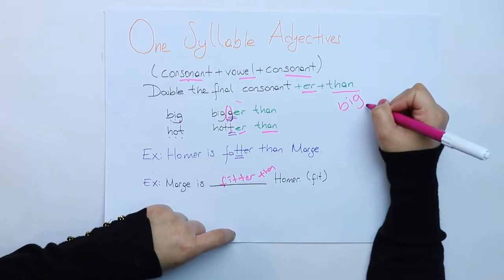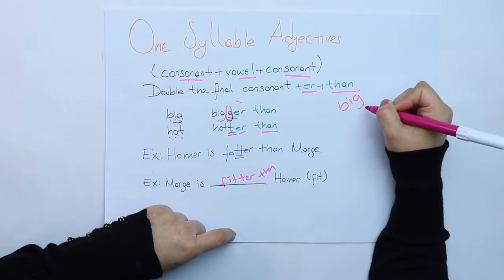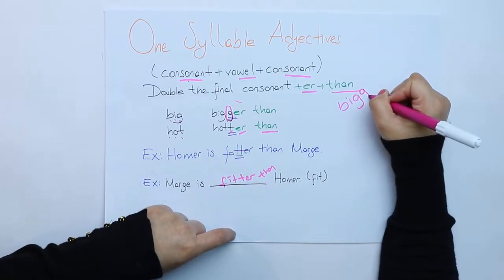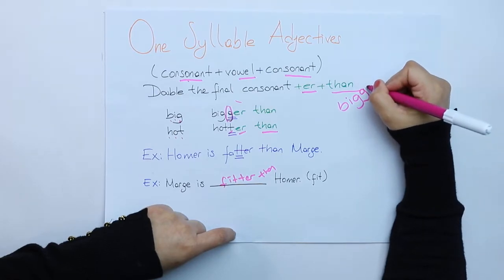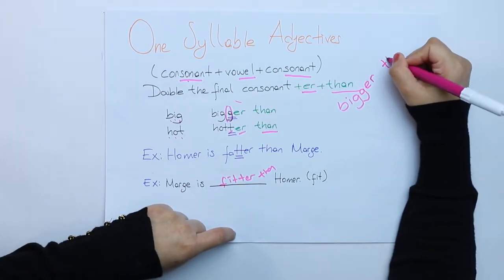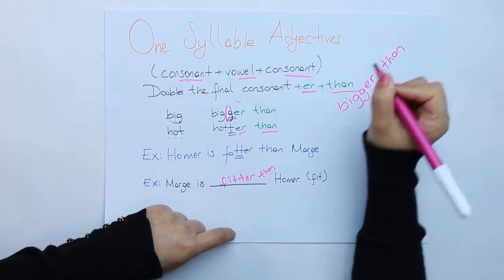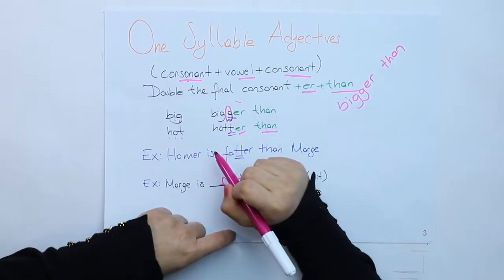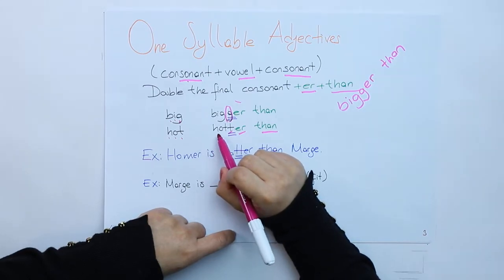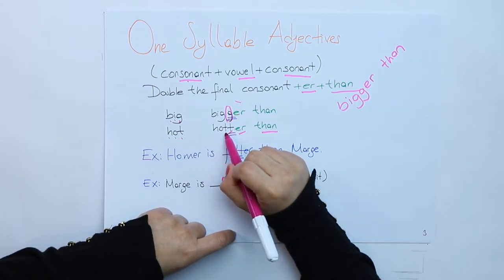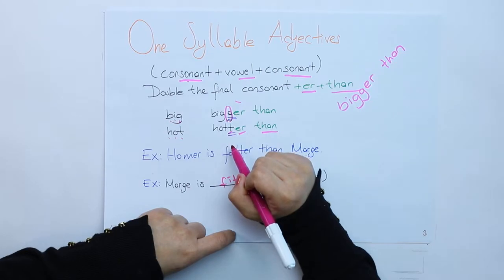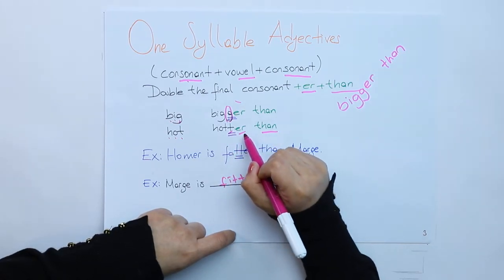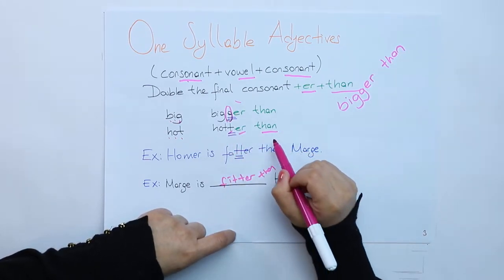For example, let's look at big. B is a consonant, I is a vowel, and G is a consonant again. So if the order is like this, I double the final consonant and add ER plus THAN.